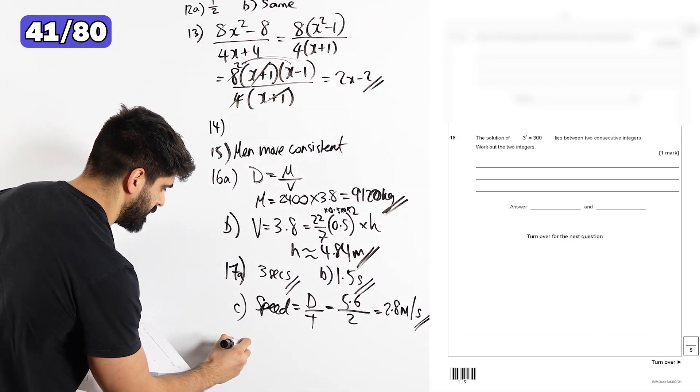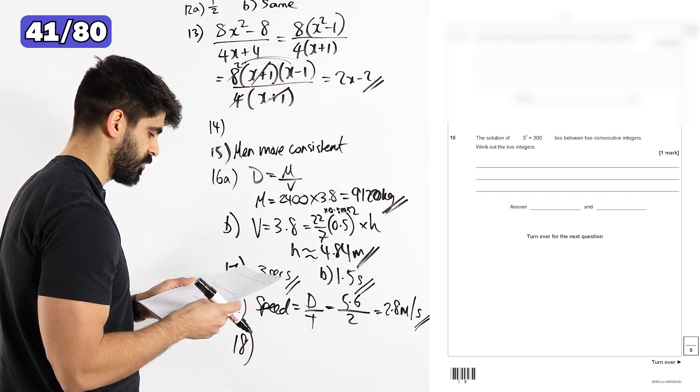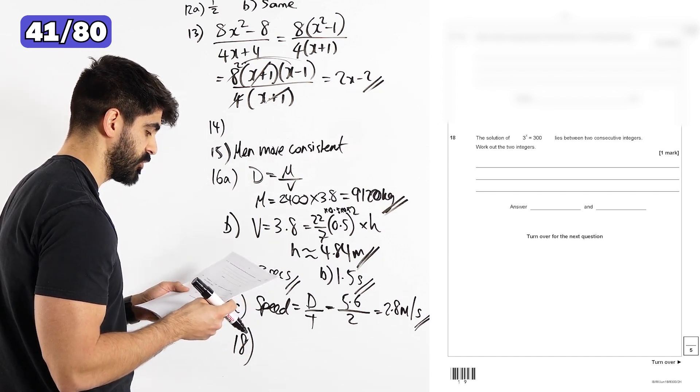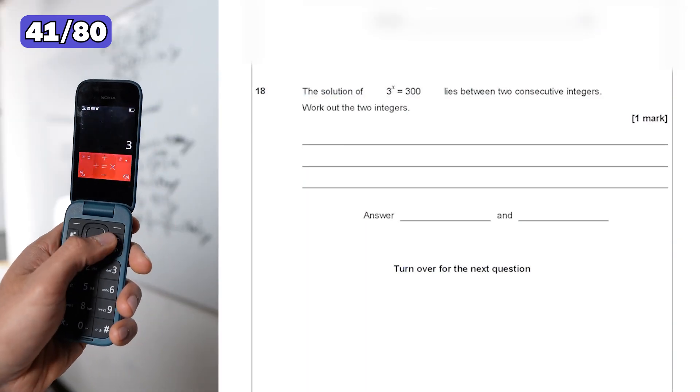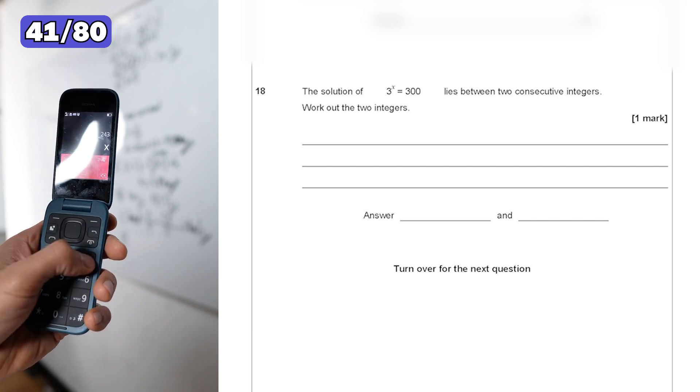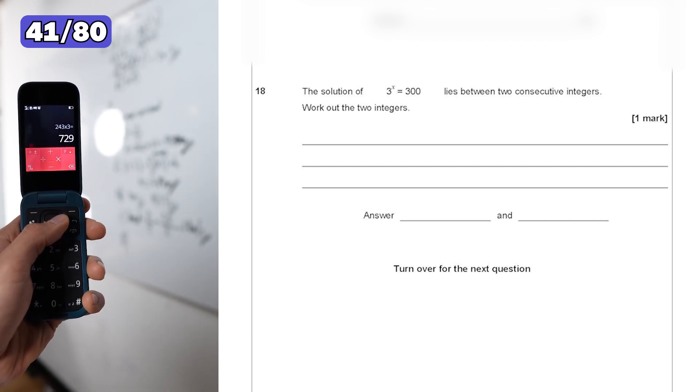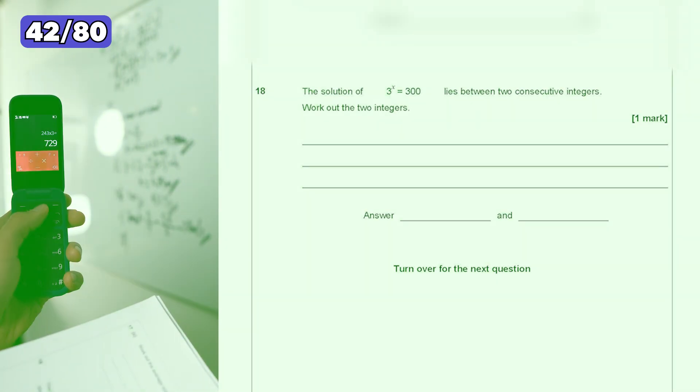Question 18. The solution of 3 to the power of x equals 300 lies between two consecutive integers. Work out the two integers. So we have 3 times 3. So that's 2, 3, 4, 5, 6. So it's between 243 and... Now I've lost count. So 243 and 729 is between 5 and 6.